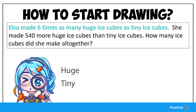Elsa makes six times as many huge ice cubes as tiny ice cubes. Do you spot the keywords 'six times as many as'? If you did, good job on the quick observation.